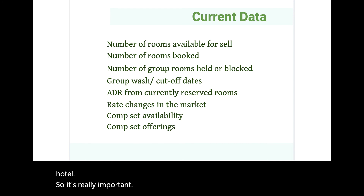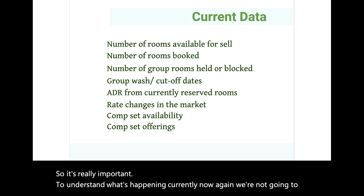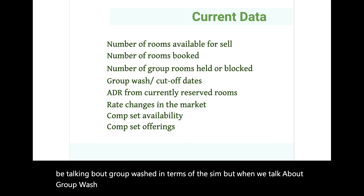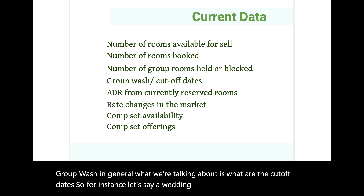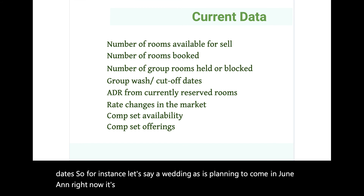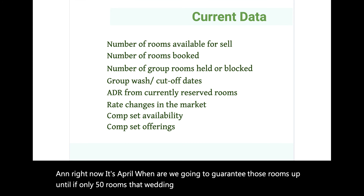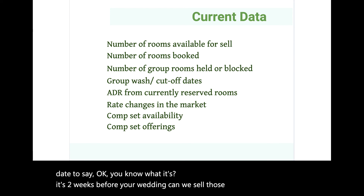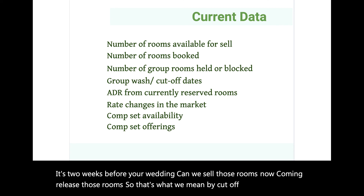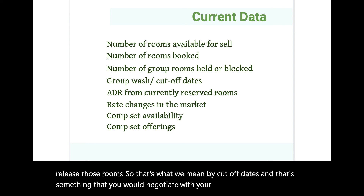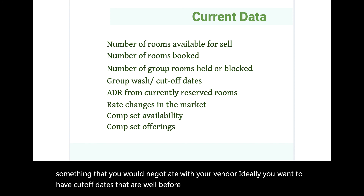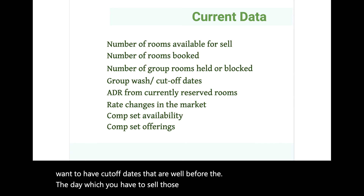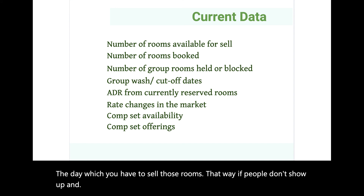Group wash refers to cutoff dates. For instance, if a wedding is booked for June and it's currently April, we need to determine when we'll guarantee those rooms. If only 50 rooms of that wedding group actually show up, we need a cutoff date — say, two weeks before the event — to release those rooms so we can sell them to transient guests. Ideally you want cutoff dates well before the arrival date, so if people don't show up you can sell those rooms again.